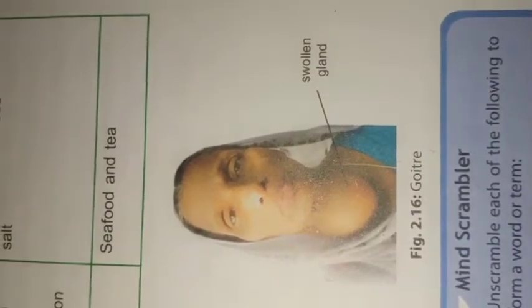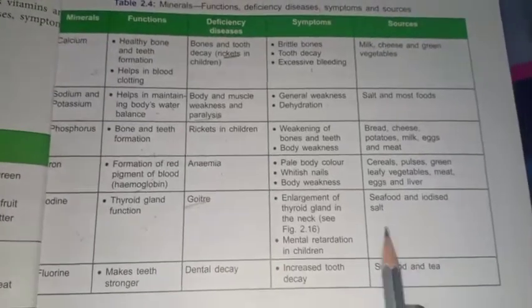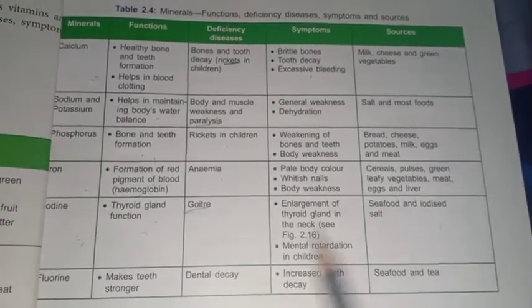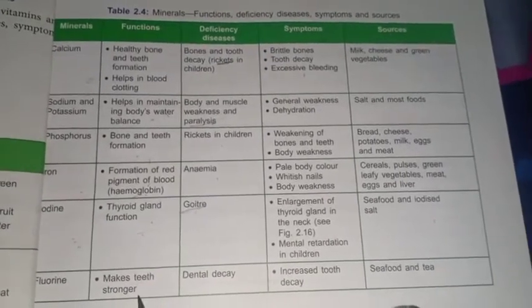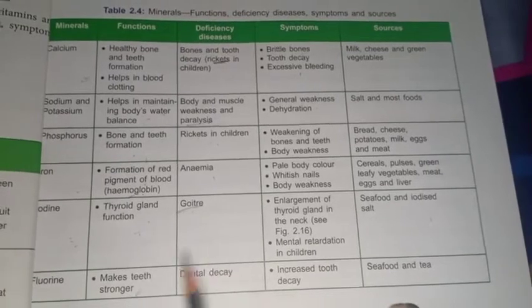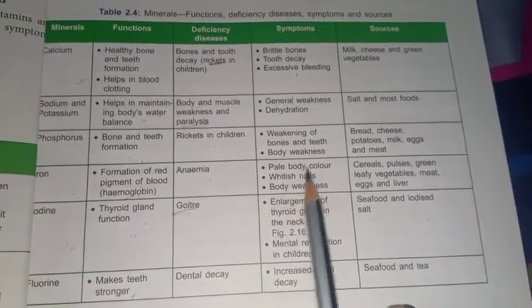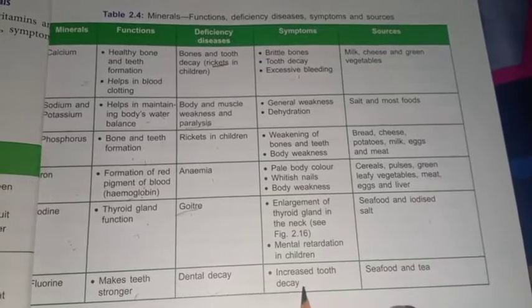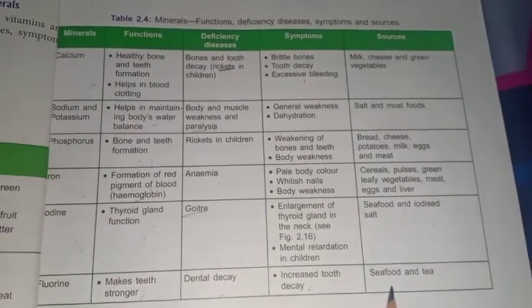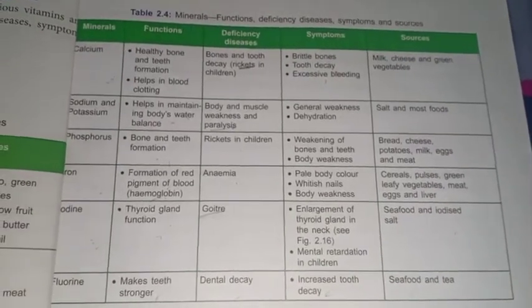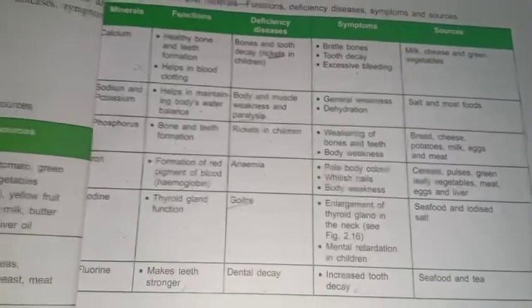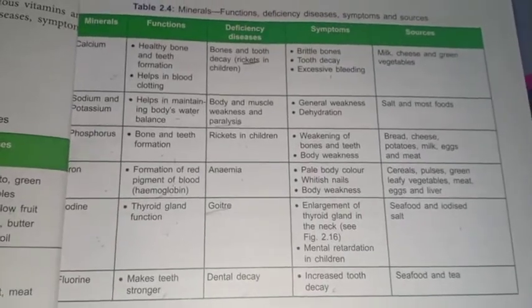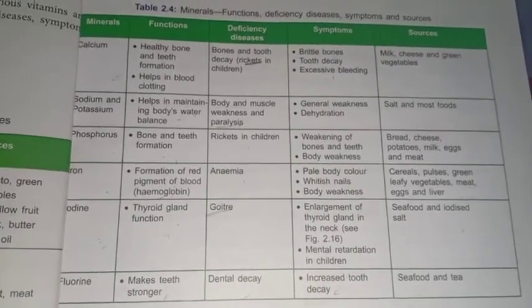The swollen gland is called goiter disease. Sources of iodine are seafood and iodized salt, which we have already studied. The last mineral is fluorine. It helps in making teeth stronger. Its deficiency causes dental decay. Symptoms are increased tooth decay. Its sources are seafood. This completes our chapter — I hope you liked my video, thank you.